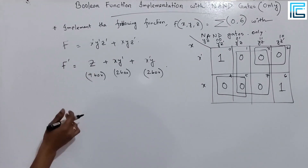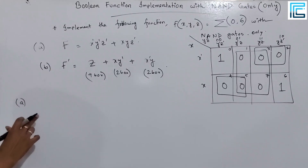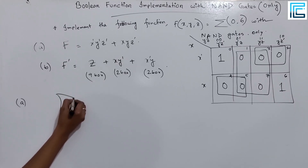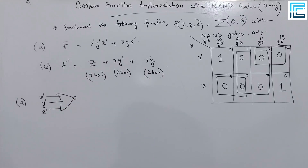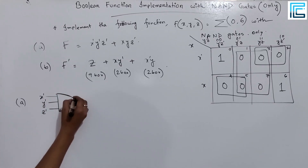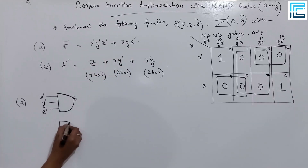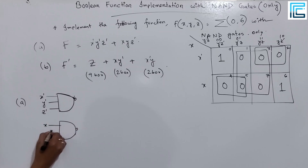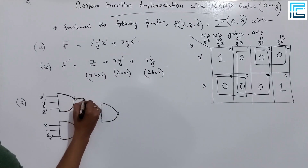We have the function f prime — that means we will draw the logic diagram. To implement, we take x prime, y prime, z prime. We implement x prime, y prime, z prime using a NAND gate. Then we also take x·y·z prime and feed it into a NAND gate.